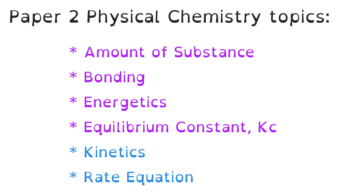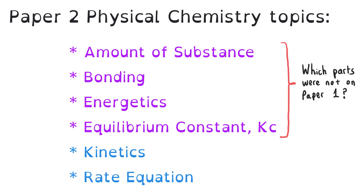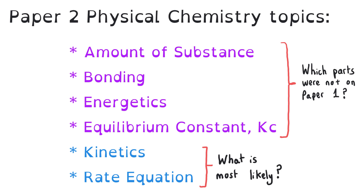There are six physical chemistry topics that could come up on Paper 2. Four of them have already come up on Paper 1 and I'll look at what didn't come up from those topics, and then there are two that are only able to come up on Paper 2 and Paper 3, and we'll zoom in on the priorities from those topics as well.